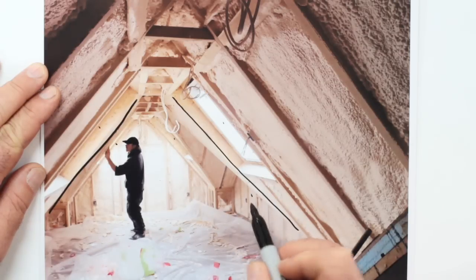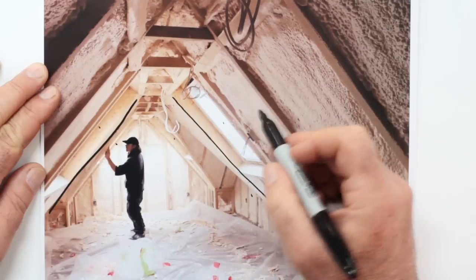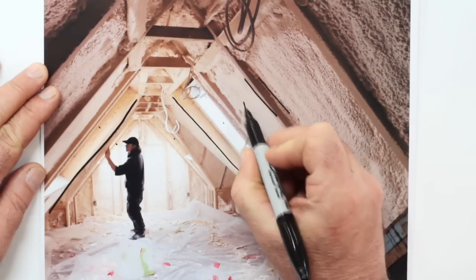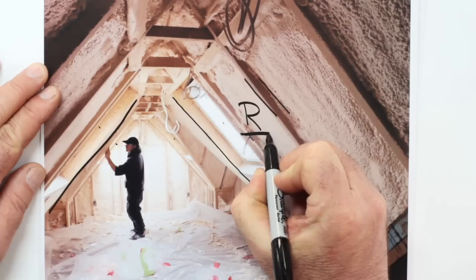One of the things I really like about spray foam here is that it seals so well around framing structures. And it also has a high R value, in this case about R30, for just the roof structure itself.